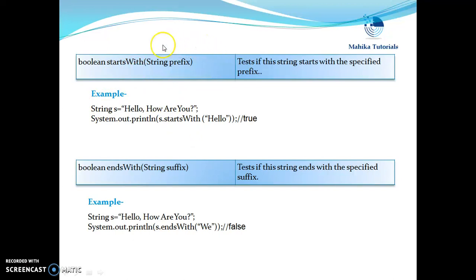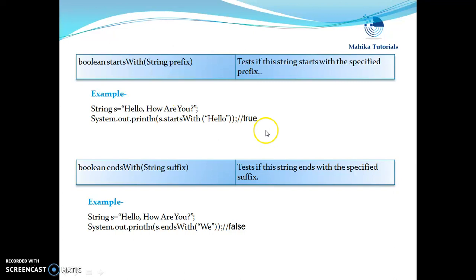The next method is startsWith, which takes one string prefix as a parameter and returns a boolean value. This method tests if the string starts with the specified prefix — returning true if so, otherwise false. Suppose if we have s equals 'hello how are you' and we say print s.startsWith('hello'), since it is true in our case, it is going to print true.